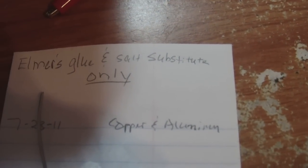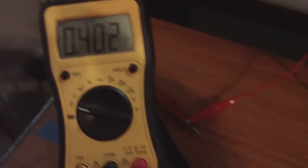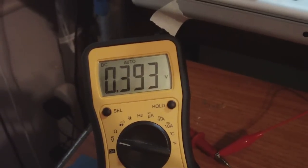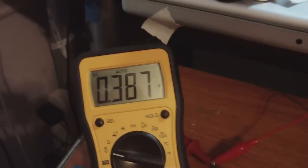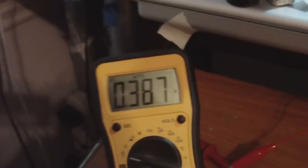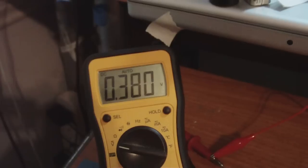Now I'm going to show you guys the Elmer's glue and salt substitute cell with copper and aluminum. Let's hook it up. This one does a little bit better, but it's not as good as the new crystal cell, glue crystal cell I've made. But it is better than the cell before this one.